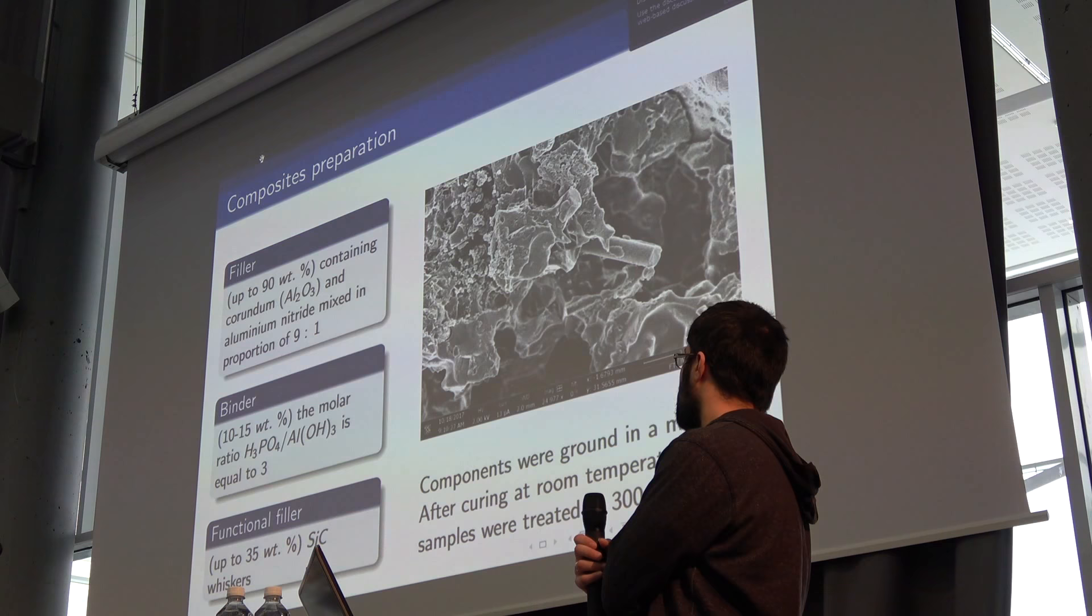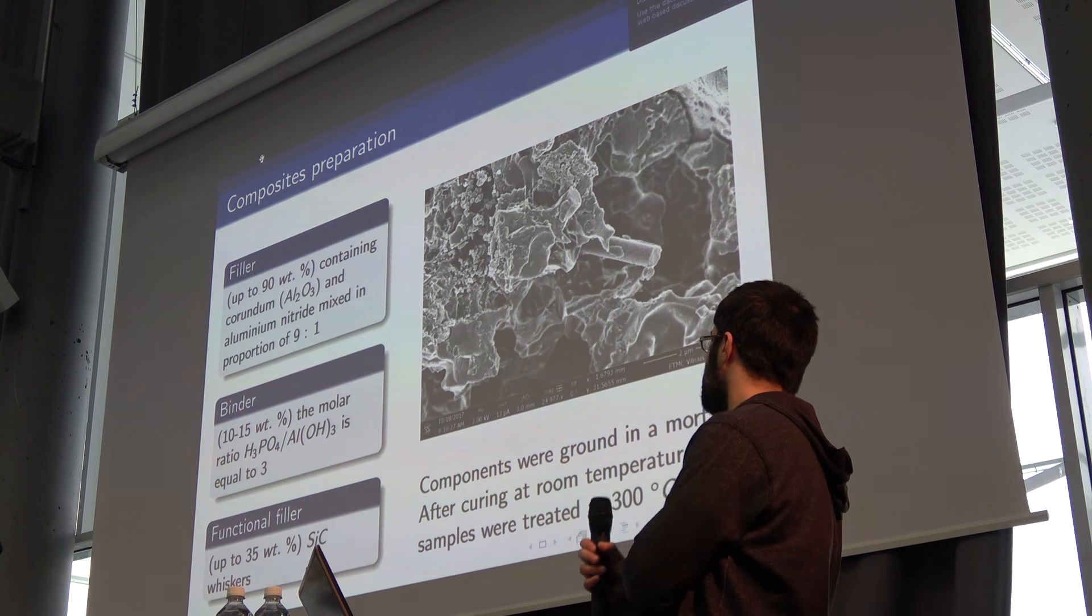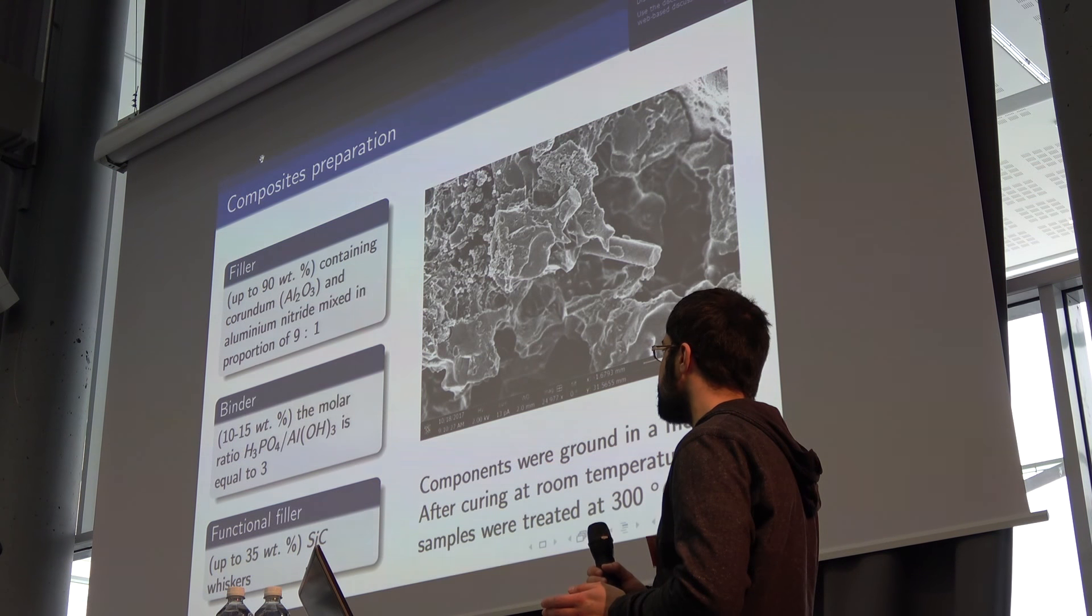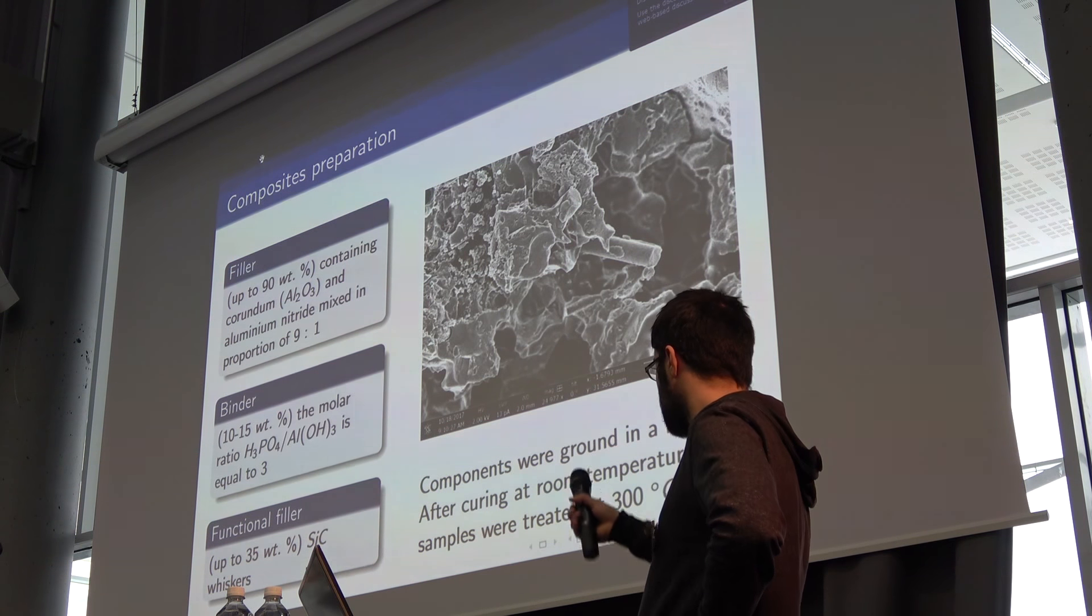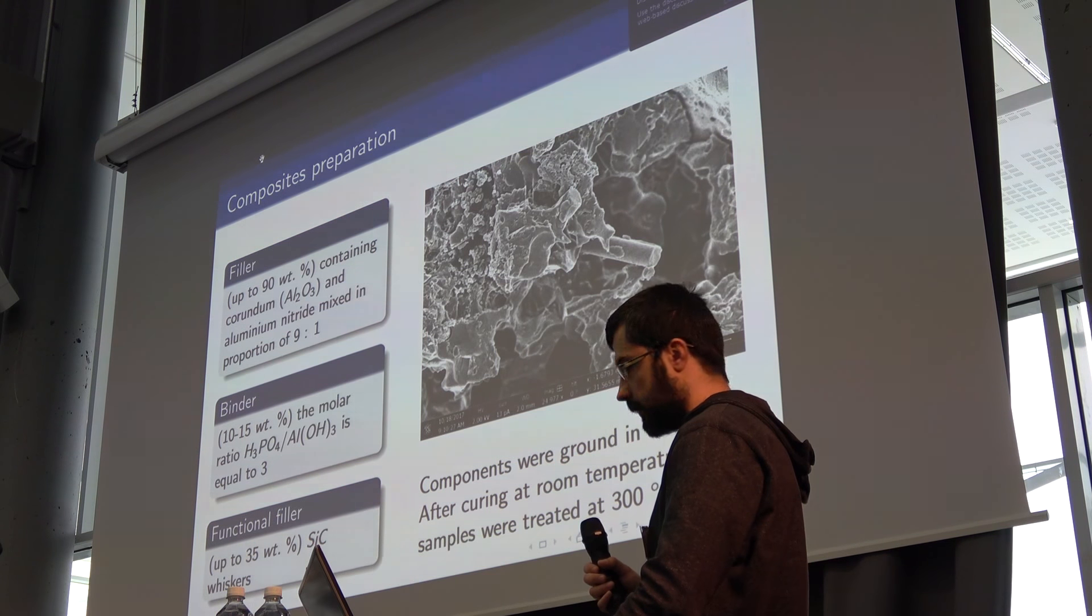The filler contains a mixture of corundum and aluminum nitride, and the binder is a mixture of phosphoric acid and aluminum hydroxide. As a functional filler, we use silicon carbide nanowhiskers.